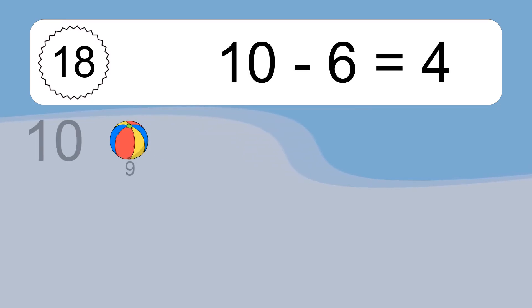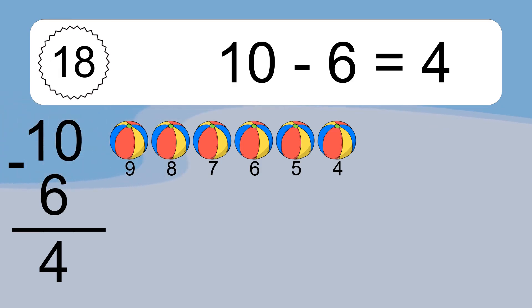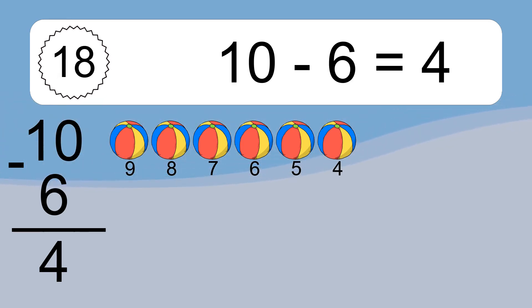Ten minus six equals what? Ten minus six equals four. Let's count it: 9, 8, 7, 6, 5, 4.